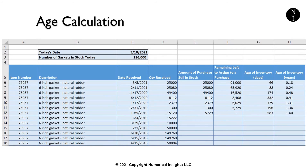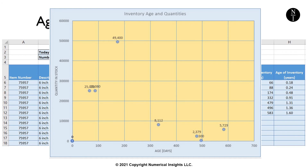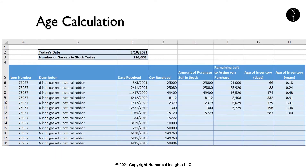In this example, we finish our age assignments with the October 5, 2019 purchase. While we purchased 15,120 gaskets in this purchase, we only have 5,729 left to account for, so we have 5,729 gaskets that are 583 days old. We can now examine the overall picture of the age of this gasket. We certainly see that we have gaskets that are more than one year old. Internally, we need to decide how old these gaskets can get before we no longer wish to use them in production.